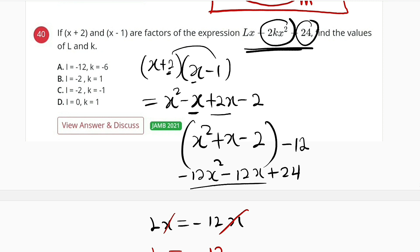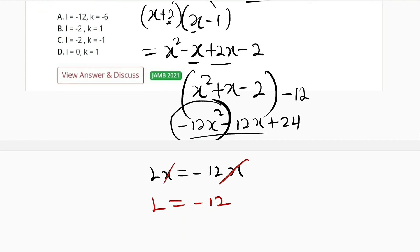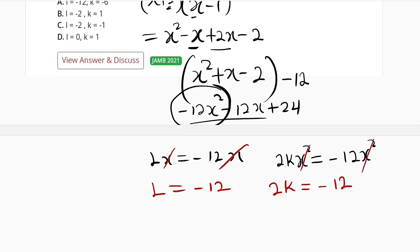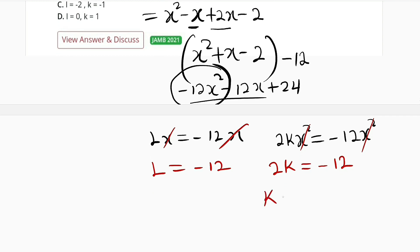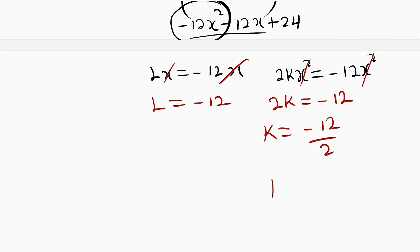Then we take the second one. You can see 2kx squared will be equivalent to negative 12x squared. So 2kx squared is equal to negative 12x squared. This will cancel. We have 2k equal to negative 12. And k finally is equal to negative 12 divided by 2, and k must be equal to negative 6.